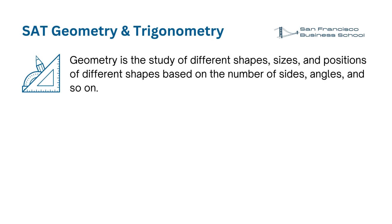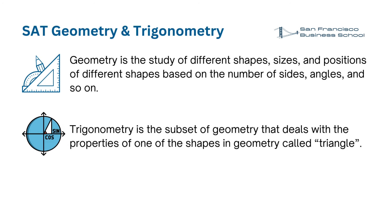Geometry is the study of different shapes, sizes, and positions of different shapes based on the number of sides, angles, and so on. Whereas trigonometry is the subset of geometry that deals with the properties of one of the shapes in geometry called triangle.